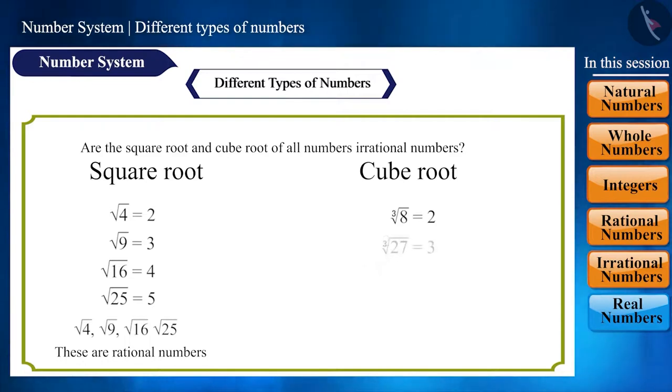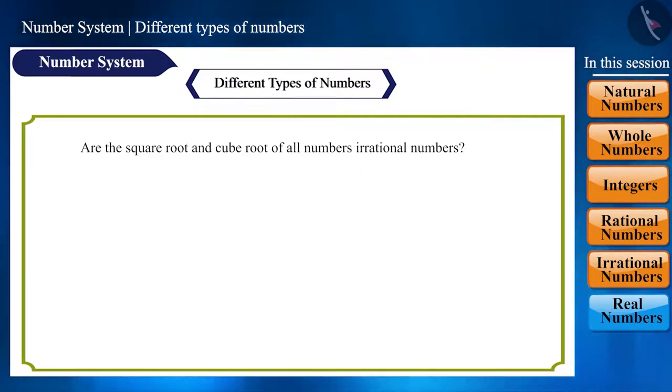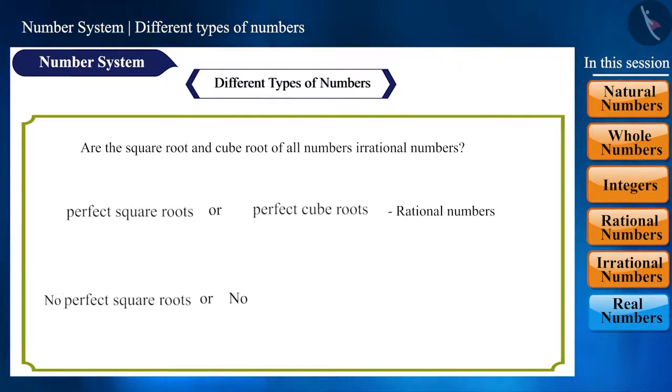Numbers that are perfect square roots or perfect cube roots are called rational numbers. And numbers that do not have proper or perfect square root, cube root, etc. are called irrational numbers.